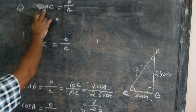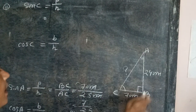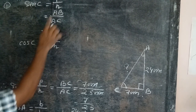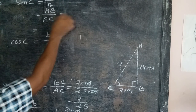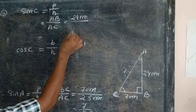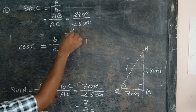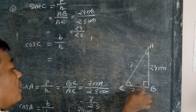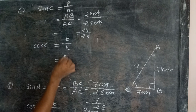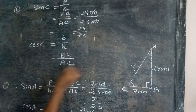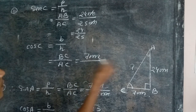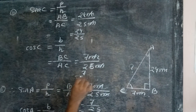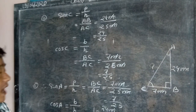For angle C: the perpendicular is AB, AB measurement is 24 cm, and hypotenuse AC measurement is 25 cm, so sin C equals 24 by 25. And cos C equals BC over AC equals 7 by 25.